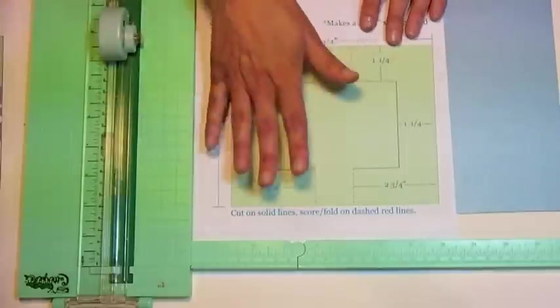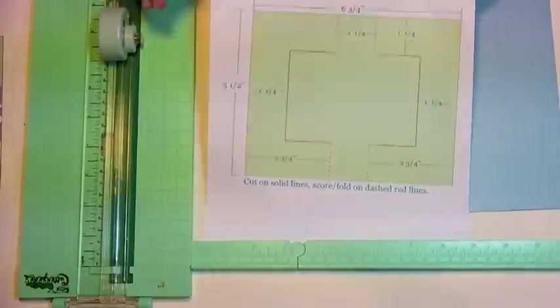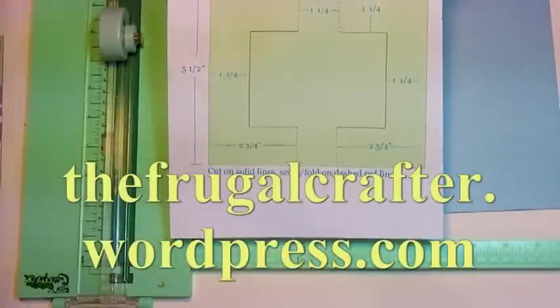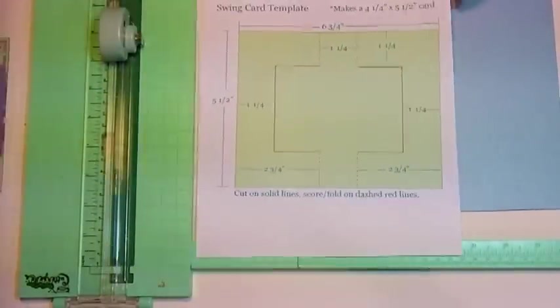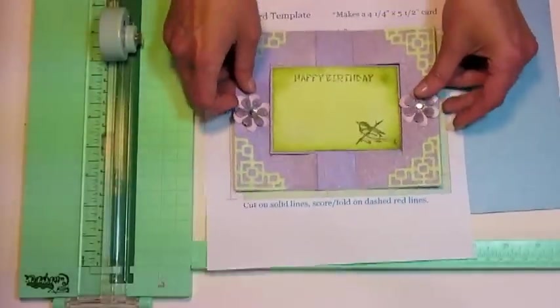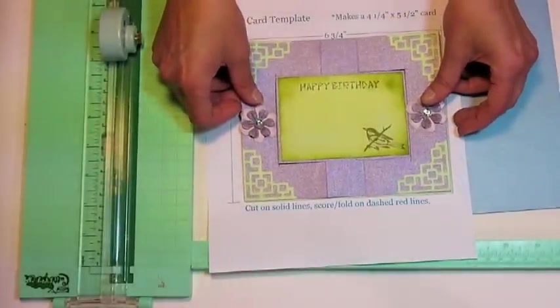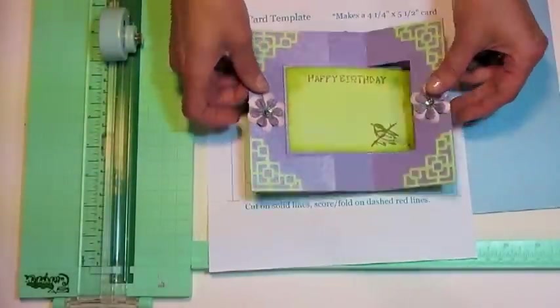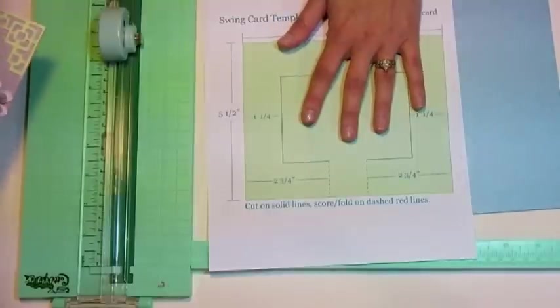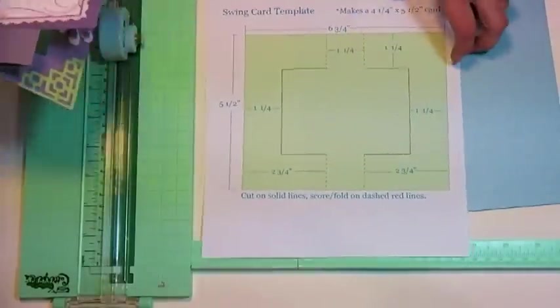It's very easy to do, and I made a little template here, which you can print off from my blog, thefrugalcrafter.wordpress.com. It's a to-scale template, so if you want to print it off, you can set your paper on and see how it's lining up, but you really just need to look at it.